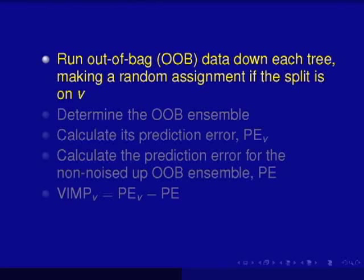Computing VIMP is actually quite straightforward. For each tree, you run the out-of-bag data down the tree. Remember, each tree is grown using bootstrap data, and the data left out — about 37% of the data — is called out-of-bag. You can use that as test data. Let's suppose V is your variable of interest. Whenever you come to a split, if that split is on V, just make a random assignment — go left or right randomly. You kind of mess up the path of the data point.